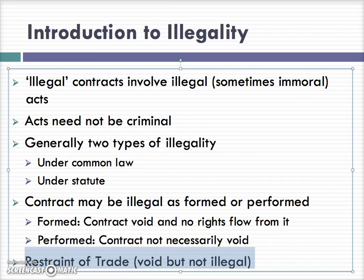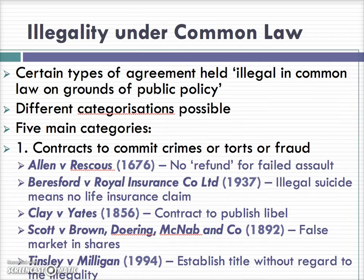Lastly, as part of this lecture, we will also look at the area of restraint of trade. Contracts in restraint of trade are void, but technically we do not deem them to be illegal. Now, let's take a closer look at illegality under common law. This type of illegality concerns contracts which are illegal on the grounds of public policy. Over hundreds of years, the courts have found many different types of contracts illegal under common law, and if we extract commonality from the cases, we arrive at five main categories.